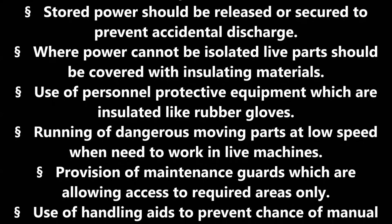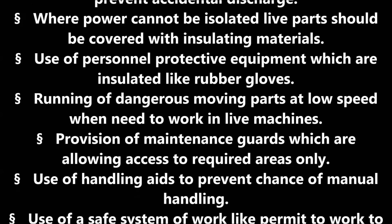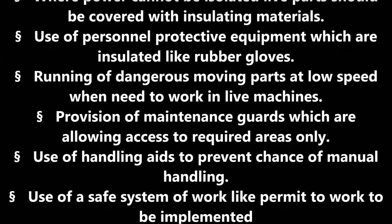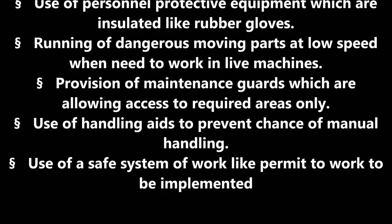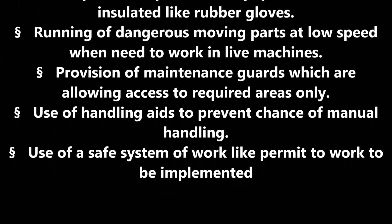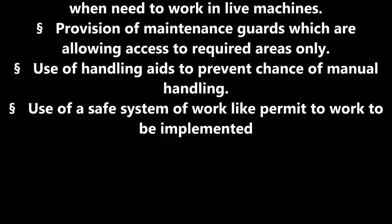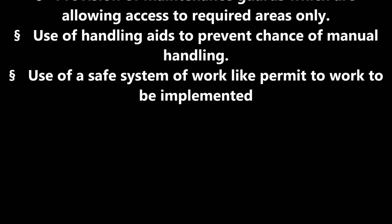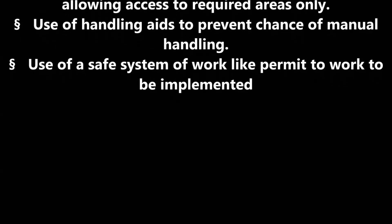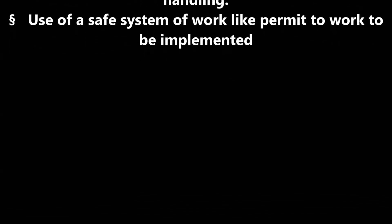Where power cannot be isolated, live parts should be covered with insulating materials. Use of personal protective equipment which is insulated, like rubber gloves. Running of dangerous moving parts at low speed when needing to work on live machines. Provision of maintenance guards allowing access to required areas only. Use of handling aids to prevent manual handling risks. Use of a safe system of work, like a permit to work, should be implemented.